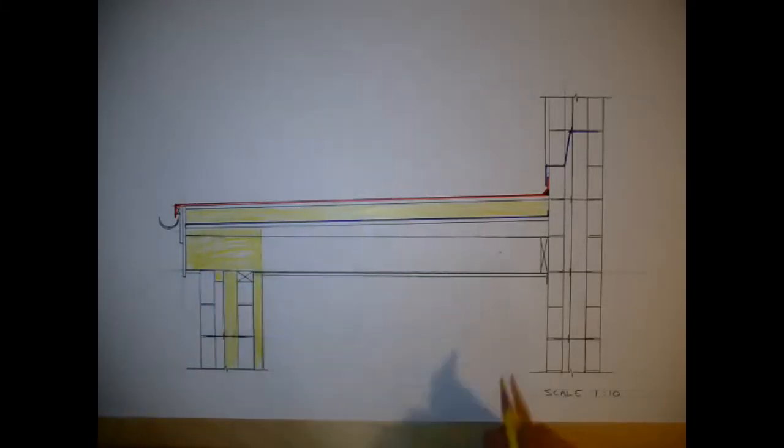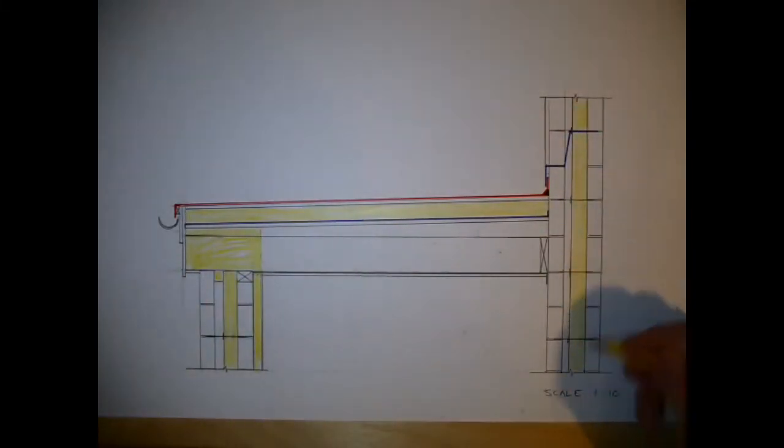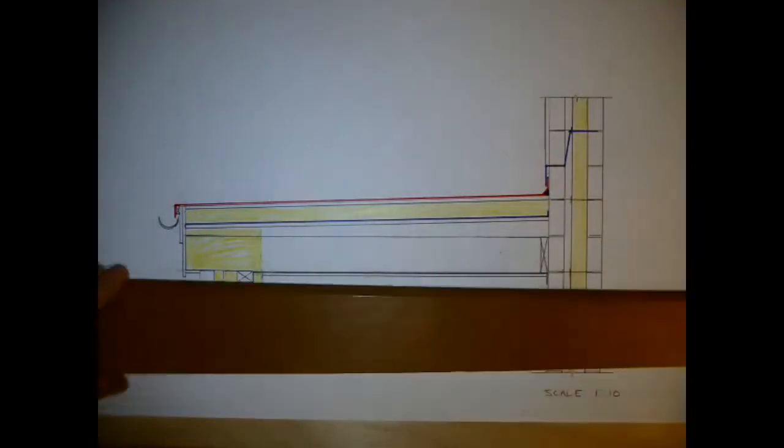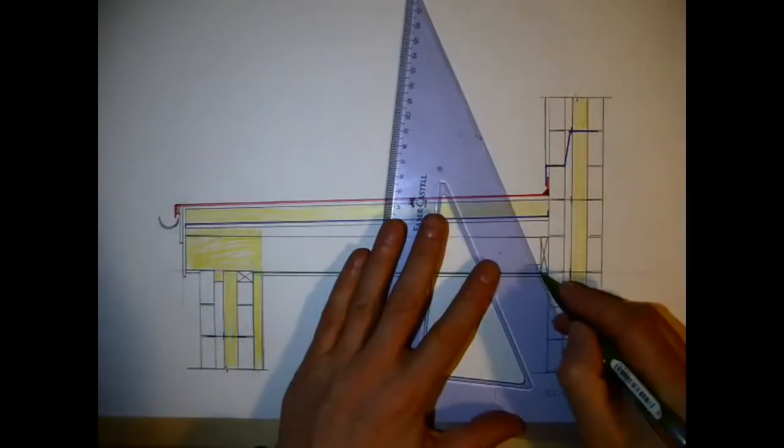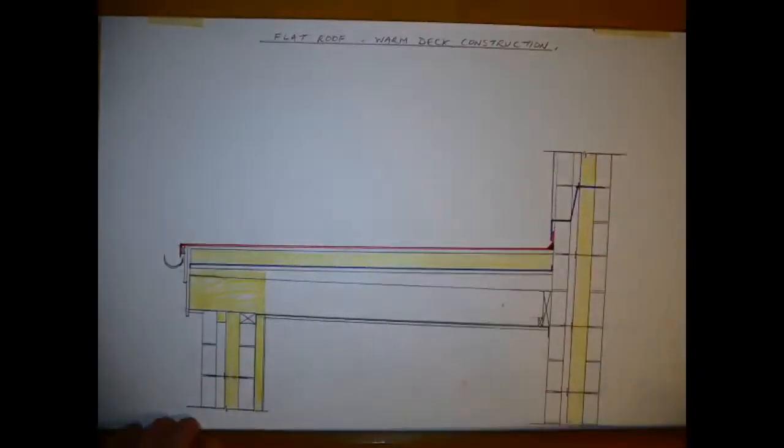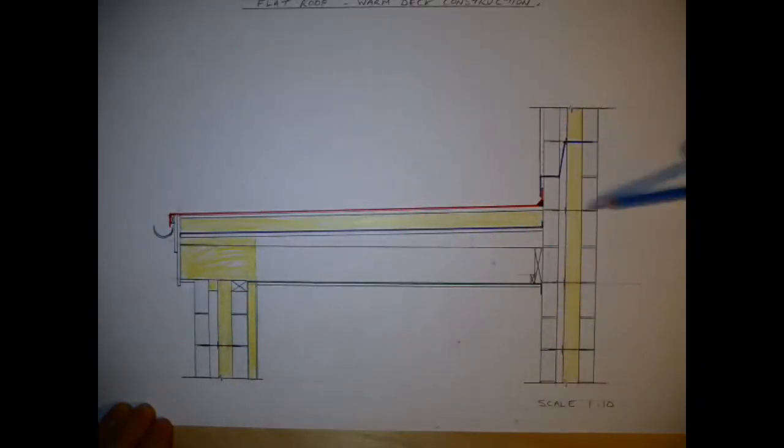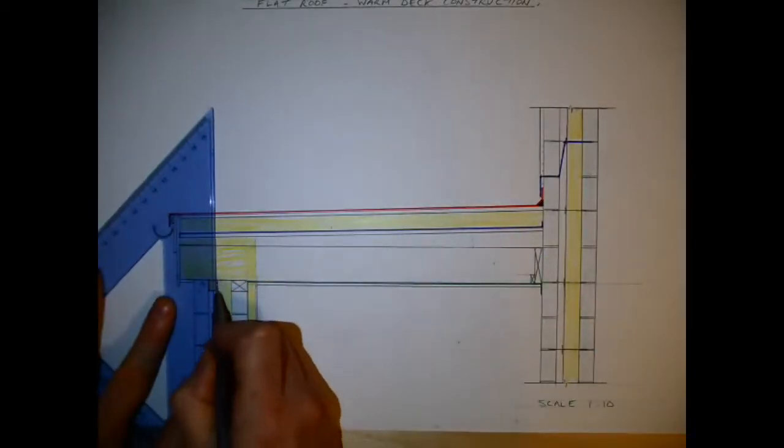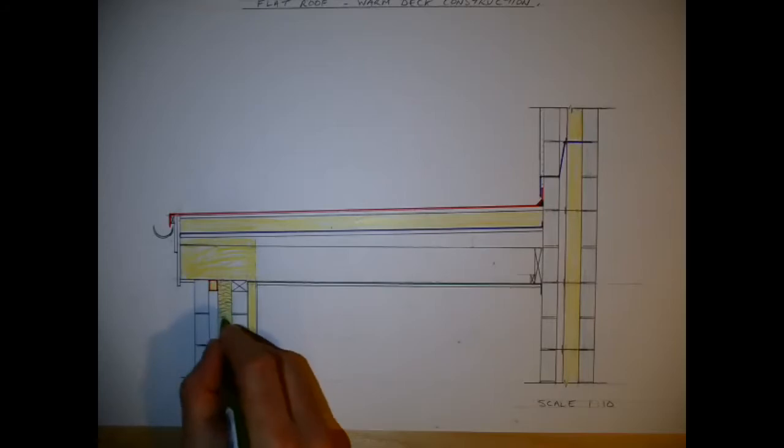I'm shading in where we have our insulation. This time I'm going right to the very top as opposed to the textbook sketch. There's a small detail of it being a notched batten with the ceiling joist. We've covered an awful lot of details here.